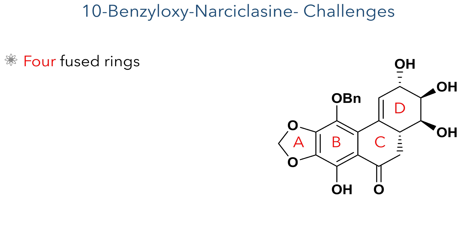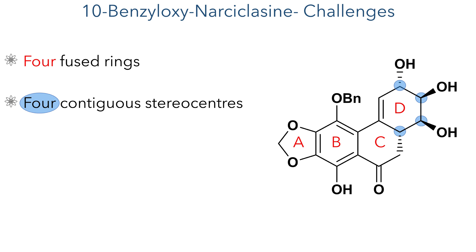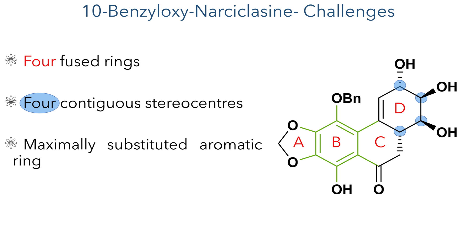These alkaloids have attracted a lot of attention from the synthetic community due to their challenging structures, which include four fused rings, one of which contains four contiguous stereocentres with three of them being tertiary hydroxyl groups. What makes this example so challenging is the maximally substituted aromatic ring, which must be constructed in a highly regio-selective manner to ensure that all six substituents are in the correct position.